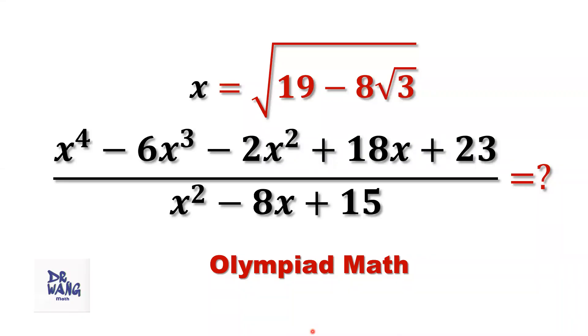Hello everyone, I'm Dr. Wang. Here is the question. If x equals square root of 19 minus 8 times square root of 3, what is the value of x to the power of 4 minus 6x to the power of 3 minus 2x squared plus 18 times x plus 23 over x squared minus 8x plus 15?